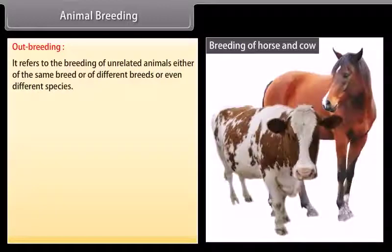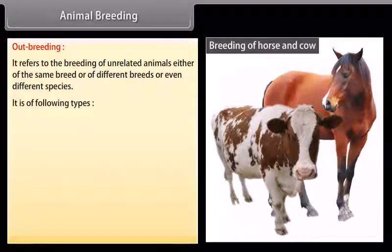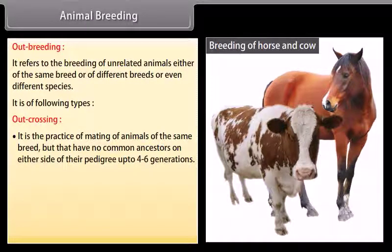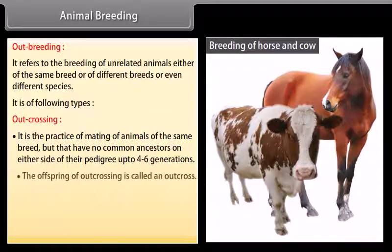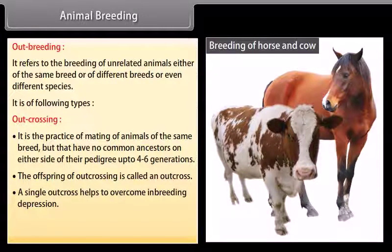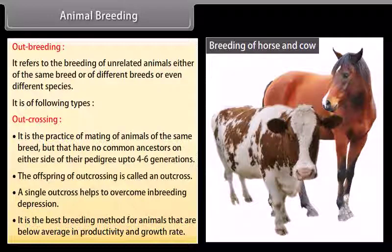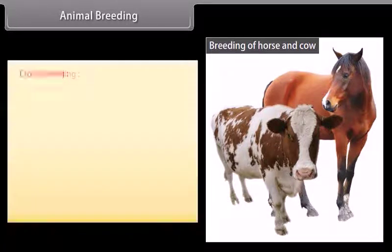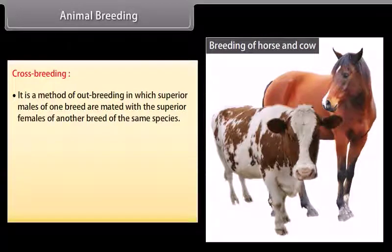Inbreeding produces homozygosity, increasing the chance of expression of harmful recessive genes. This is known as inbreeding depression. Outbreeding refers to the breeding of unrelated animals, either of the same breed, different breeds, or even different species. Outcrossing is the practice of mating animals of the same breed that have no common ancestors on either side of their pedigree up to 4 to 6 generations. A single outcross helps to overcome inbreeding depression.